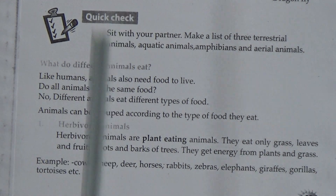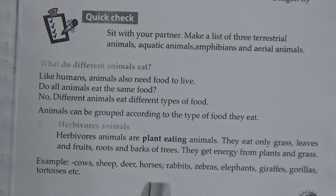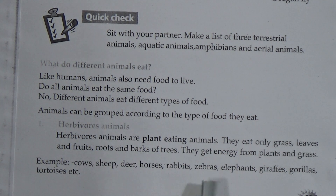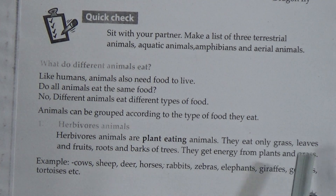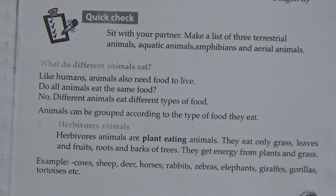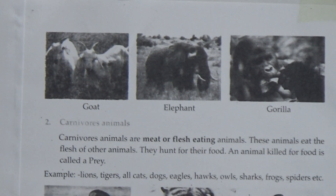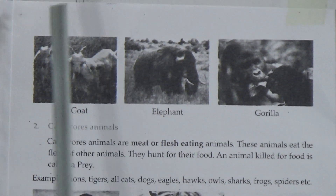Examples of herbivores are cows, sheep, deer, horses, rabbits, zebras, elephants, giraffes, gorillas, tortoises, etc. Students, now come to page 26, number 26.